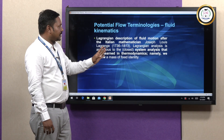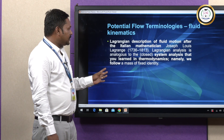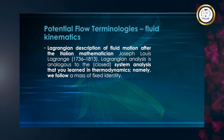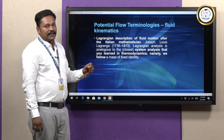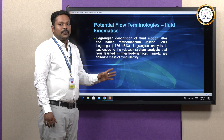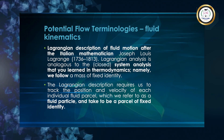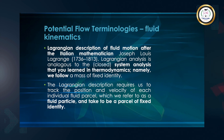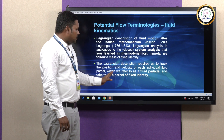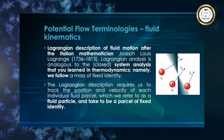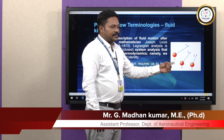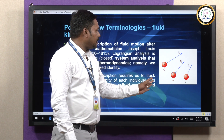What Lagrangian does is it is the fundamental concept learned from thermodynamics — we have a mass of fixed identity, and with respect to that, the time-to-time variation of how the mass has been varying. The Lagrangian description requires us to track the position and velocity of each individual fluid particle as a parcel of fixed identity. For example, we have fluid at A, B, and C, which are all moving in different directions with different velocities from different positions. Each fluid particle and its interaction will be measured.